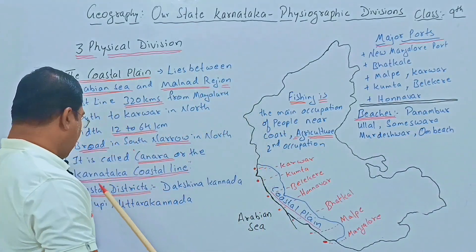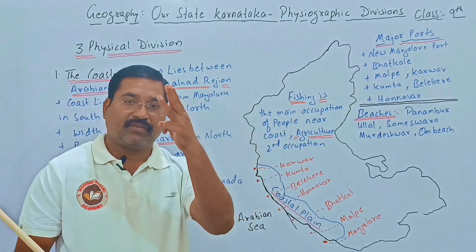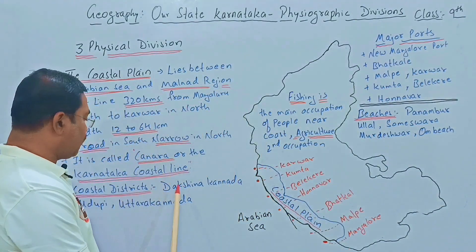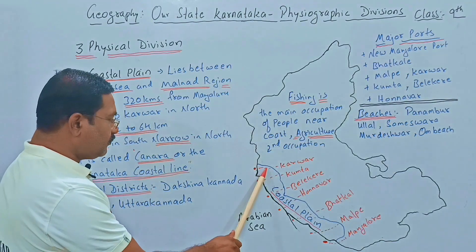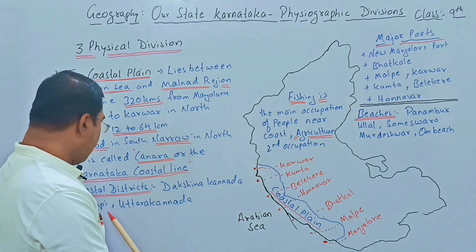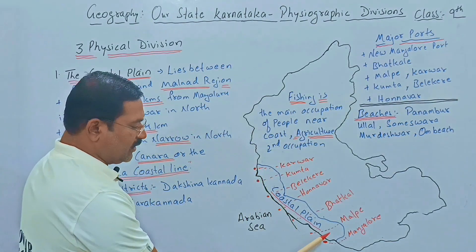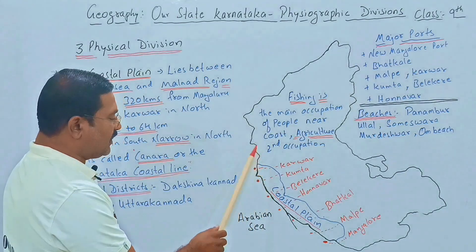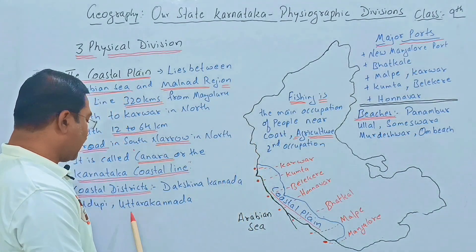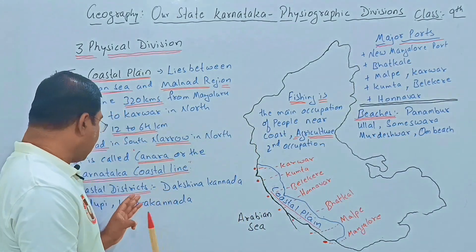In this coastal plain, three major districts are found: Dakshina Kannada, Udupi, and Uttara Kannada.